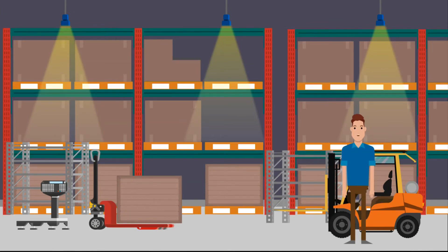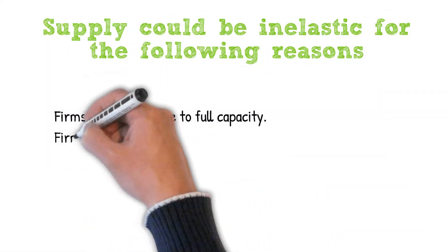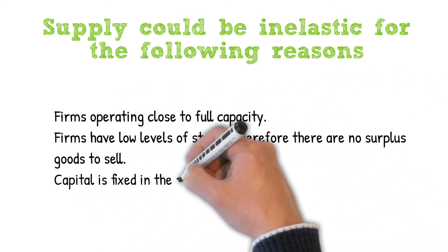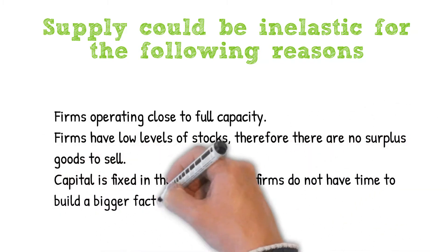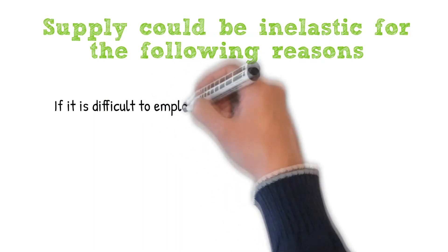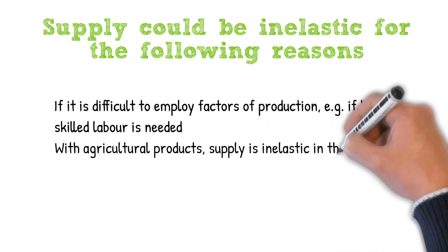In the short run, PES is inelastic because firms seldom have spare capacity to produce more goods. Supply could be inelastic for the following reasons: firms are operating close to full capacity so can't increase supply; firms have low levels of stock so there are no surplus goods to sell; capital is generally fixed in the short run — for example, firms do not have time or money to build a bigger factory; or it may be difficult to employ factors of production, such as finding the skilled labour needed.